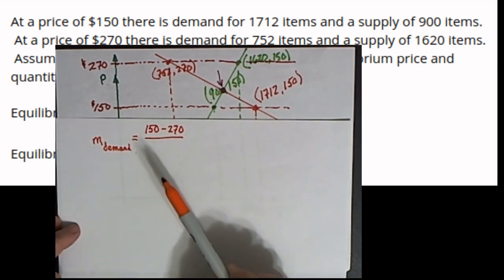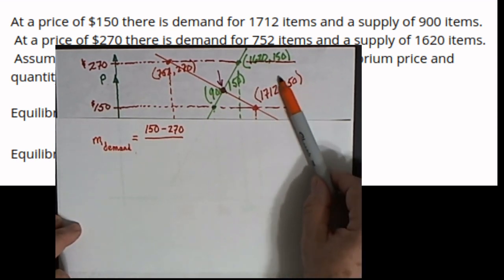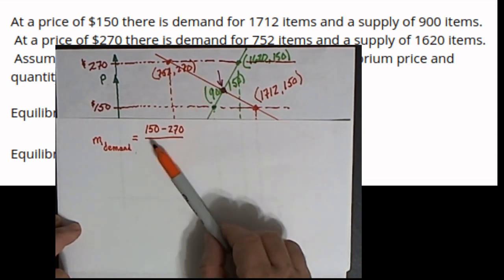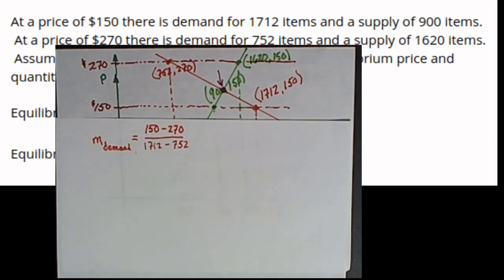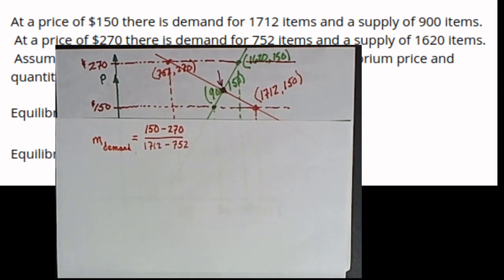So the slope for the demand curve is going to be the ending y-value 150 minus the starting y-value of 270. That's the rise. That's going to be a negative rise over the run which is the ending x-value minus the starting x-value. So that's going to give us the slope of the demand curve.